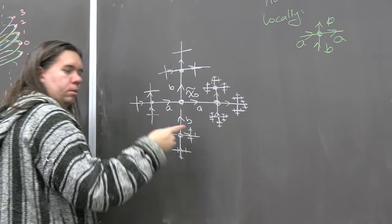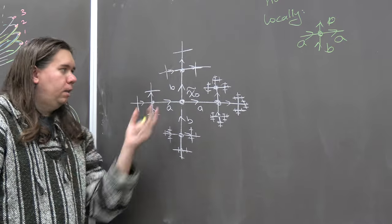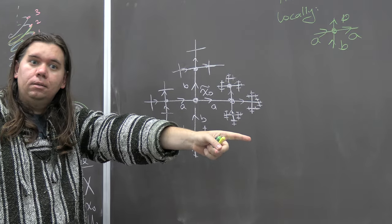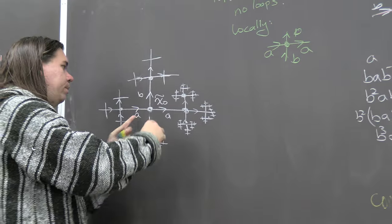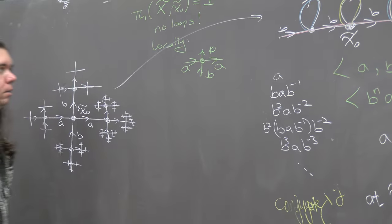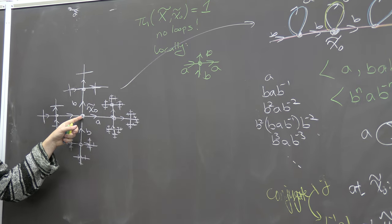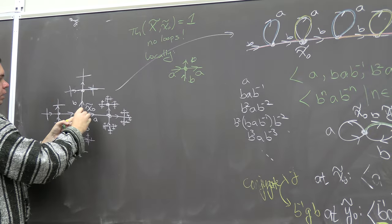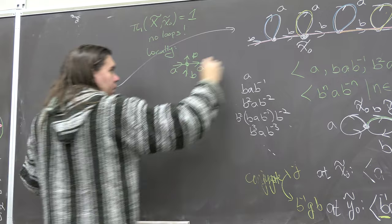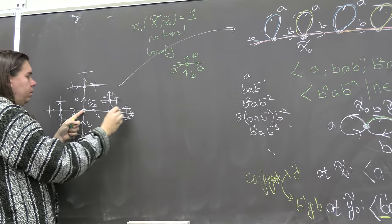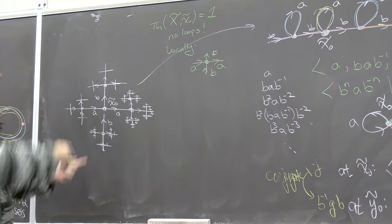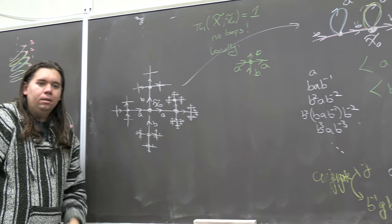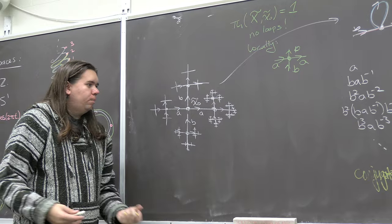We avoided any loops, and locally it looks just like the wedge at every point. This infinite fractal is therefore a covering space of all the other covering spaces — the universal cover. You can think about what the map to any other covering space looks like: going along A or B in the tree maps onto the corresponding edges below.